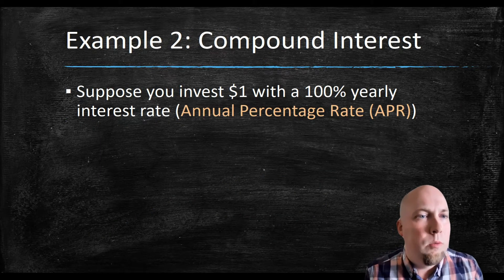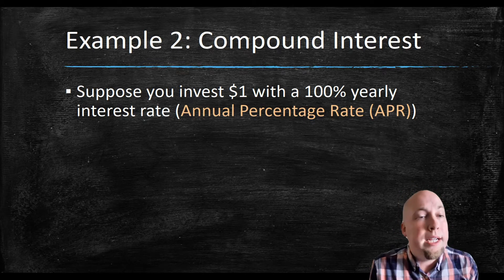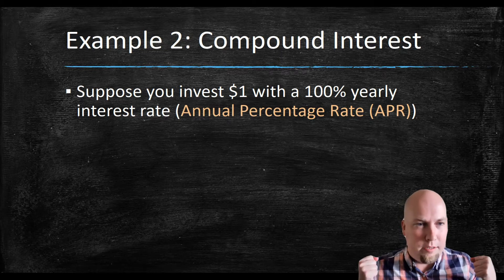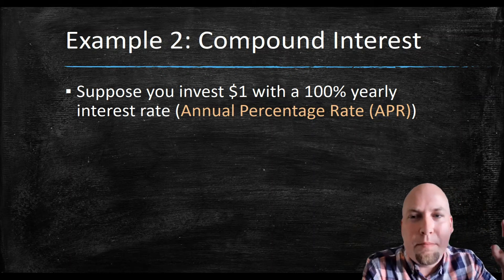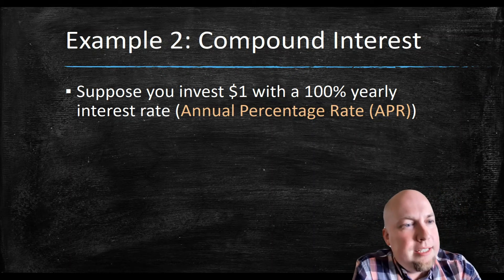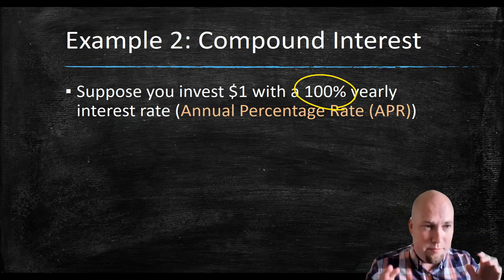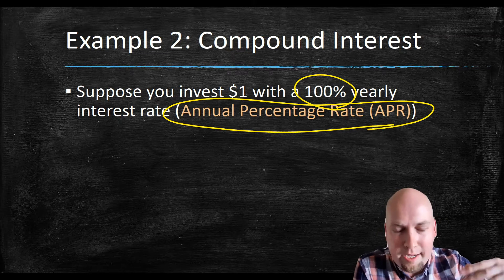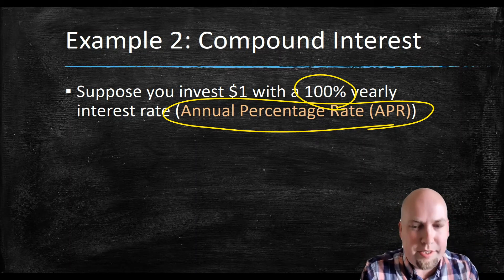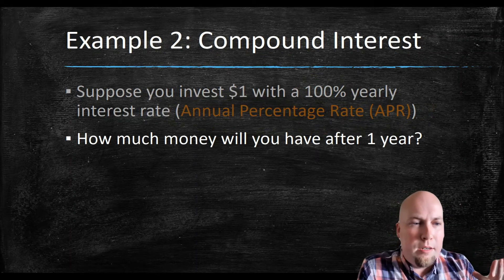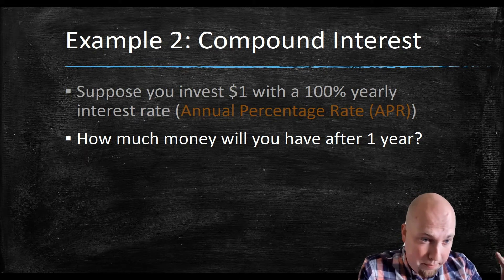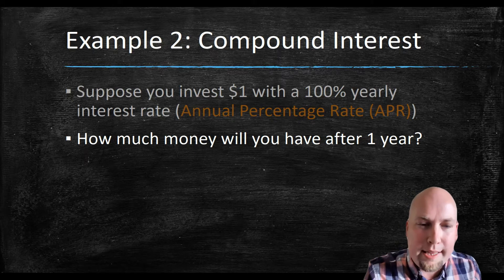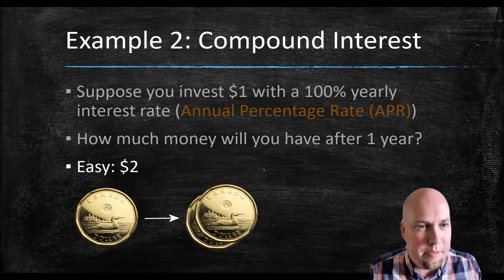As another example, one that's maybe a little more real-world, let's talk about compound interest. As a toy example, suppose you have $1 and you invest it at a 100% yearly interest rate — called APR, or annual percentage rate. If we ask how much money you'll have after one year with no compounding, the answer is simply $2: your $1 doubles.